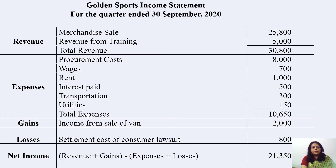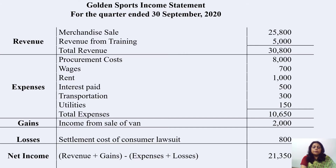Let's take a deep dive into these numbers for better understanding. The Golden Sports Company received Rs. 25,800 from the sale of sports goods and Rs. 5,000 from training services. It spent various amounts for given activities totalling Rs. 10,650. It realized net gains of Rs. 2,000 from the sale of an old van and incurred losses worth Rs. 800 for settling a consumer dispute. The net income comes to Rs. 21,350 for the given quarter. This example represents the simplest form of the income statement that any standard business can generate.